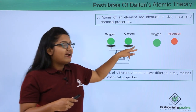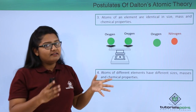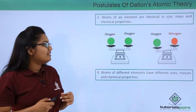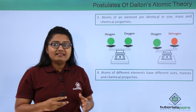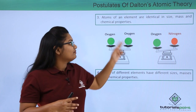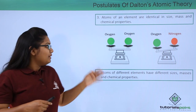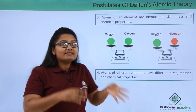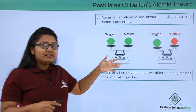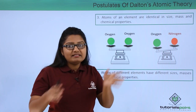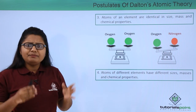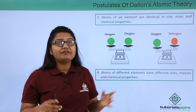When we measure the mass, we see that an oxygen atom has a little more mass than the nitrogen atom, meaning they have different sizes as well as different masses. And when we subject these two atoms to a chemical reaction, they start behaving in a completely different manner.